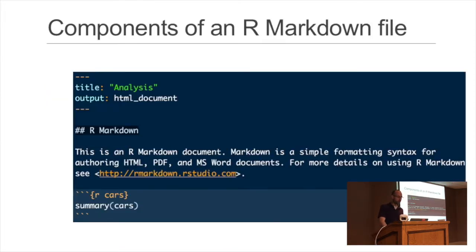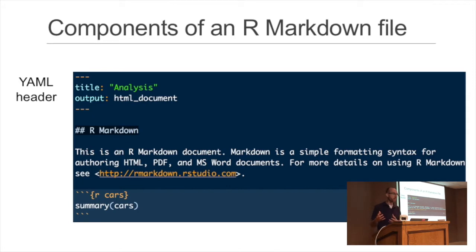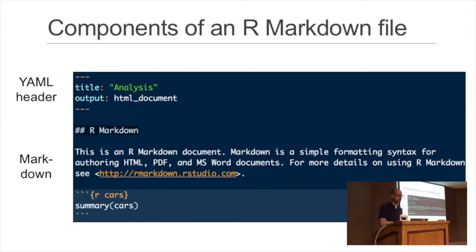For those unfamiliar, it's critical to understand for the rest of the talk: there are three components of an R Markdown file. There's the YAML header where you specify metadata — title, author, date, and output format. There's Markdown, the markup language that's easier to read and write than HTML. And then most importantly, the code chunks where you put the code to be executed.